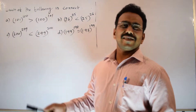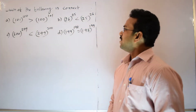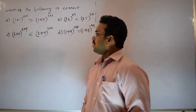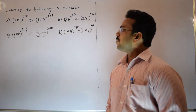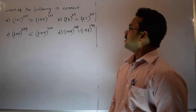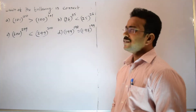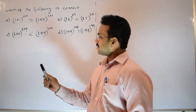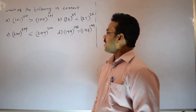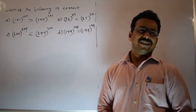Let's discuss the solution of the given question. Which of the following is correct? Option A: 101^100 greater than 100^101. Option B: 26^25 less than 25^26. Option C: 300^299 less than 299^300. And option D.